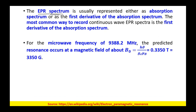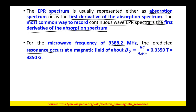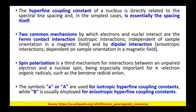The EPR spectrum is usually represented either as an absorption spectrum or as the first derivative of the absorption spectrum. The most common way to record a continuous-wave EPR spectrum is as the first derivative. At a microwave frequency of 9388.2 MHz, the predicted resonance occurs at B0 = hν/(ge·μB), which comes out to be 0.35 Tesla, equal to 3350 Gauss. The hyperfine coupling constant of the nucleus is directly related to the spectral line spacing.